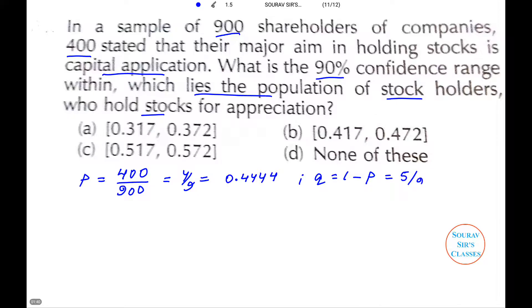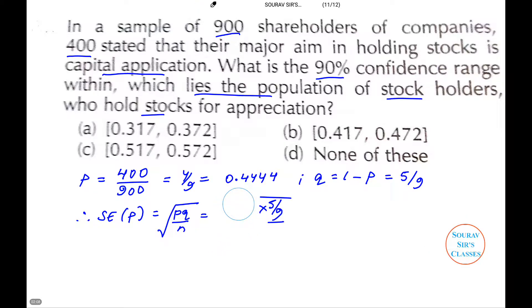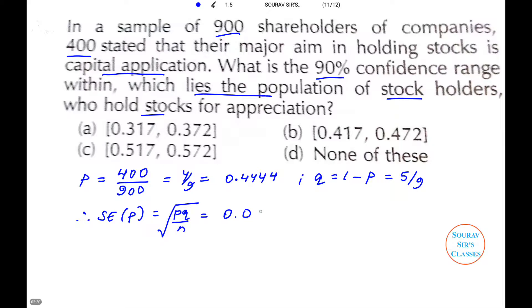The standard error of P, using the formula √(PQ/N), we get √(4/9 × 5/9 × 1/900). We know the values of N, P, and Q, so the answer works out to approximately 0.0166.